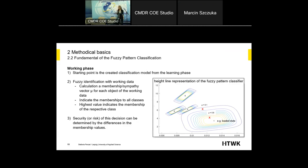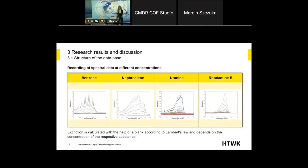Here you can see an example where class one displays a loaded state. Let's say we do a measurement in August and our working data shows a membership value of 0.1 — so it's nearly class one, but not so dangerous. But then in September we do our measurement again, and now our membership vector is 0.8 — really near to class one. We can say it's in the loaded state and we have something to do.